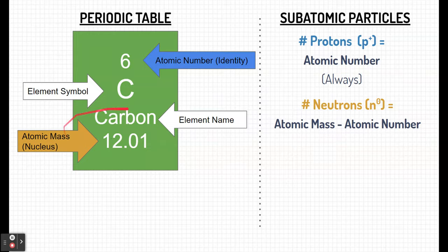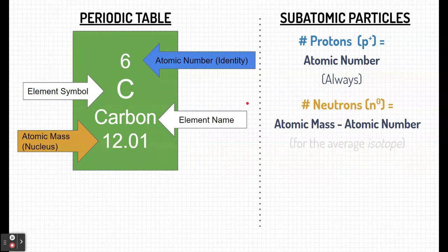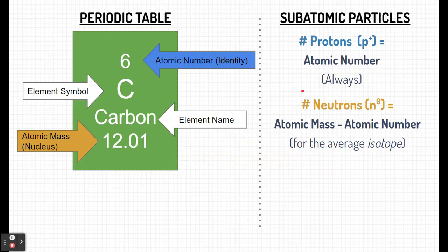If we take the atomic mass and round it and subtract the atomic number, which is the number of protons, we can determine the leftovers in the mass, which is the number of neutrons. So again, this is for the average isotope, and we'll talk about isotopes later. But that's how you determine the number of neutrons.